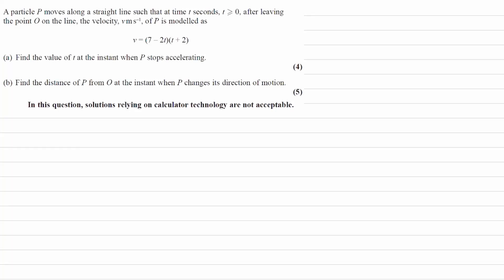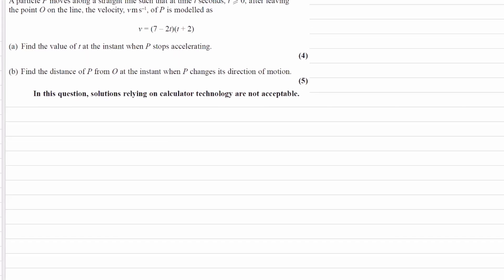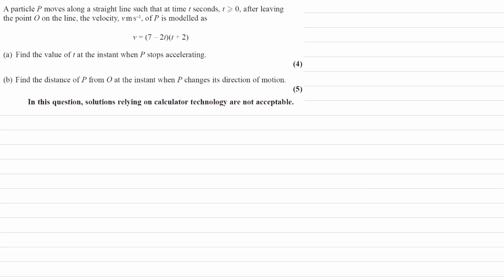A particle p moves along a straight line, such that at time t seconds, where t is greater than or equal to 0, after leaving point O on the line, the velocity is given by this equation here. We want to find the value of t at the instant when p stops accelerating.